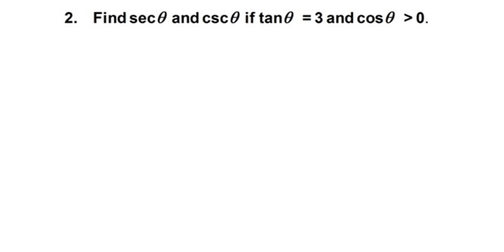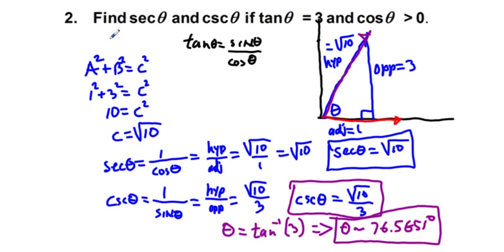Problem two: find secant theta and cosecant theta if tangent theta is three and cosine theta is greater than zero. You can pause and try to solve it. Here's the solution: we have a reference triangle with opposite of three and adjacent of one. Using the Pythagorean theorem, the hypotenuse is square root of 10. So secant theta equals square root of 10, cosecant theta equals square root of 10 over three, and theta measures 76.5651 degrees.